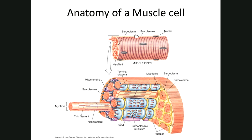The fluid inside of a muscle cell is given a special name: the sarcoplasm. So we have the sarcolemma and the sarcoplasm. Muscle cells also have endoplasmic reticulum, visible as blue structures in the picture, but with a different function, so they're called the sarcoplasmic reticulum.